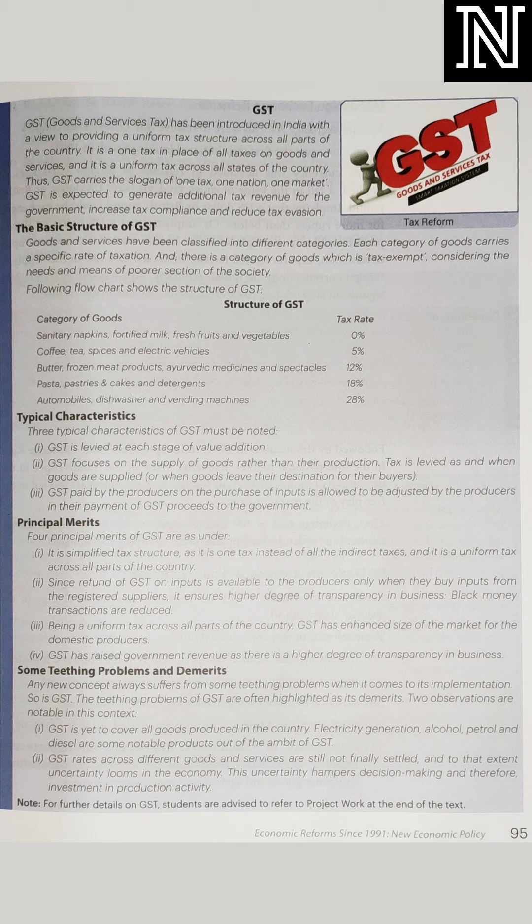Demerit — first demerit क्या है? GST is yet to cover all goods produced in the country. अभी आपने देखा GST सारे goods पे नहीं लग रहा — मगर धीरे-धीरे इसको सारे goods पे लगाएंगे. Electricity, alcohol, petrol — ऐसे products हैं जिन पर बहुत high rate of GST लग रही है, 28% GST लग रही है. फिर GST rate across different goods and services are still not finally settled — तो अभी भी अलग-अलग goods हैं जिन पे rate इन्होंने settle नहीं किए हैं, कहीं पे ज़्यादा हैं, कहीं पे बहुत कम हैं. तो यह uncertainty है, investment नहीं करना चाहते हैं जिसमें high GST लगता है — तो यह problem आ रही है.